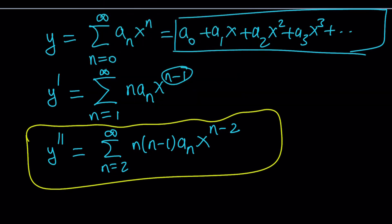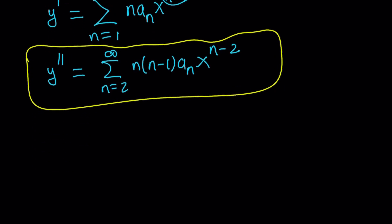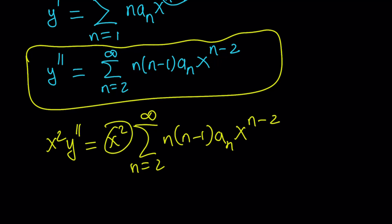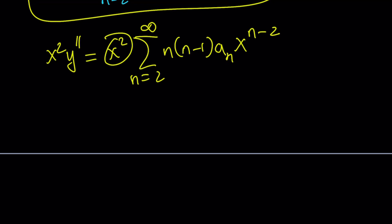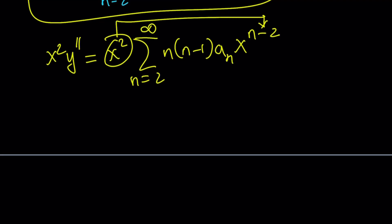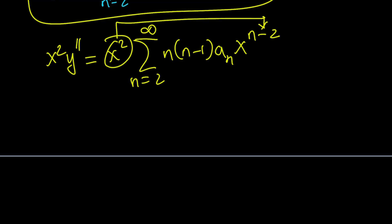We're going to multiply this by x squared now, and since x squared does not depend on n, we can easily get that inside the expression. So x squared y double prime is going to be x squared times this, n equals 2 to infinity, n times n minus 1 times a sub n, x to the power n minus 2. And now we can go and put that inside. And when we multiply x squared by x to the power n minus 2, because this is kind of like a sum, that means by multiplying by the general term, you're basically multiplying by every term in the sum. And again, x does not depend on n, so we're able to do that. If we have an expression that contains n, obviously that's a different story, because that's going to change with every n value.